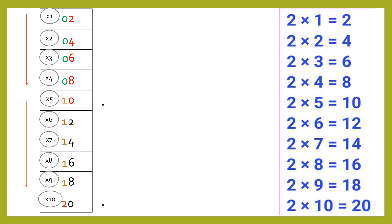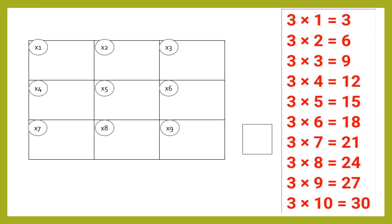We can prepare the table of two for any times we want. To prepare the table of three, let's make a box of three columns and three rows, plus one box separately. Let's start with the first box of the last row and see what will come on the unit place in the table of three.